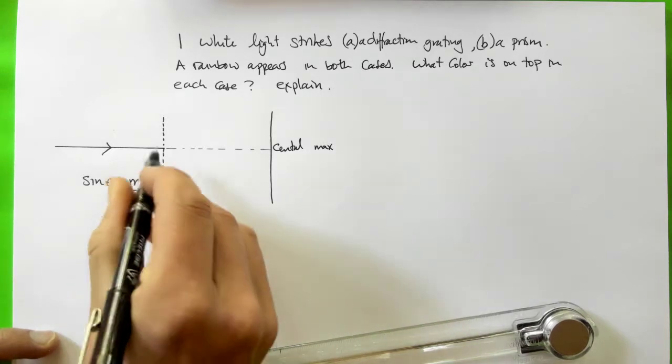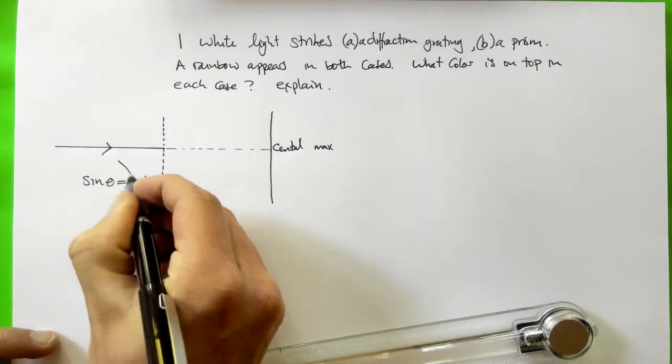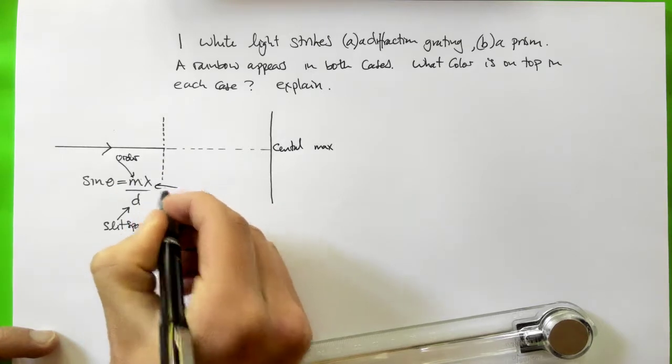That's the spacing between the individual lines on the diffraction grating. m is the order, lambda is the wavelength.